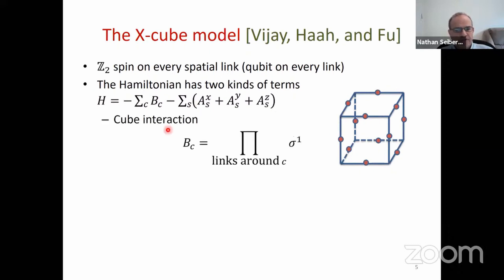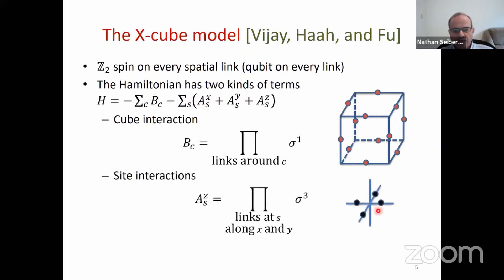The first term is a cube interaction: on every cube, we go around its 12 links and place the operator σ1 on each link, multiplying them all around the cube, then summing over the lattice. The second kind of term is associated with the sites: we pick a site, look at the XY plane, and multiply σ3 of the four links touching that site. This gives the Az term. Similarly we have Ax and Ay. We add all these terms together to form the Hamiltonian.